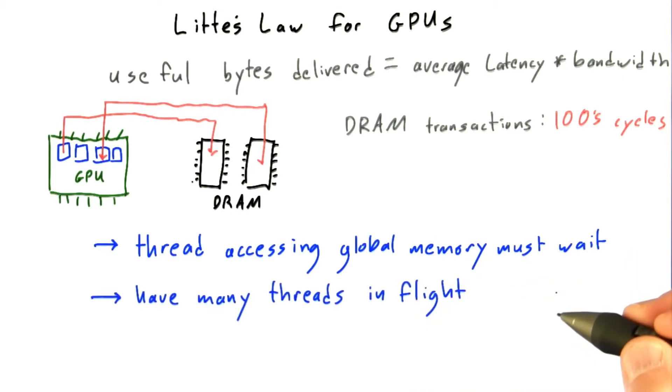And this, in turn, is why we have so many threads in flight. We deal with this high latency, hundreds of clocks between memory accesses, by having many, many threads that are able to run at any one time. So that after one thread requests a piece of data from global memory or initiates a store to global memory, another thread can step in and do some computation.